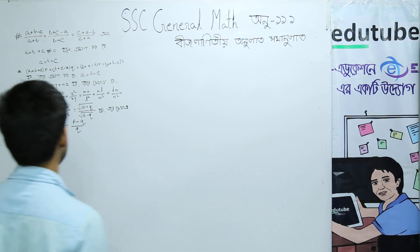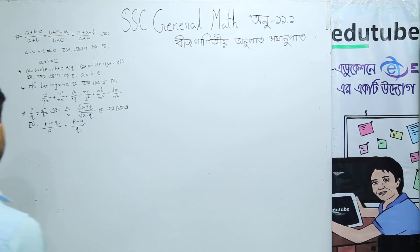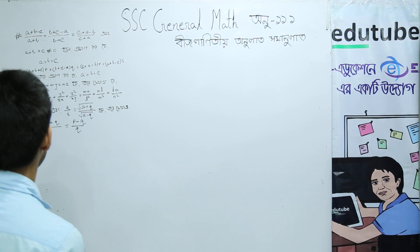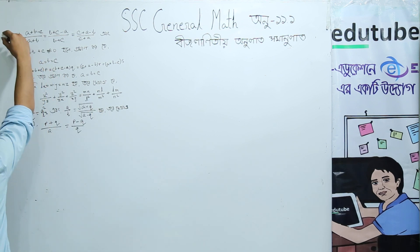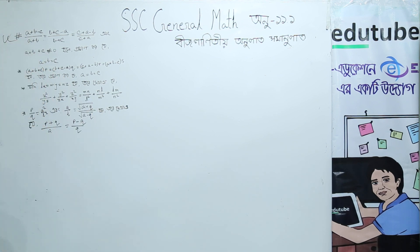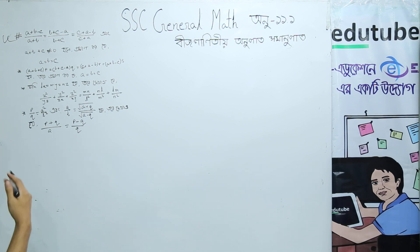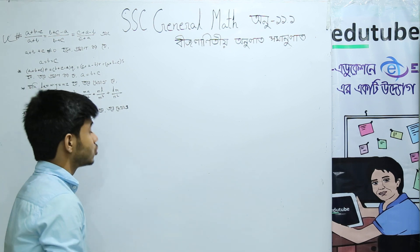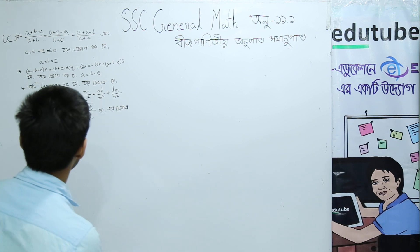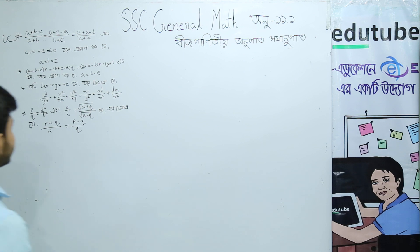We will study the first class. This is: (a plus b minus c) by (a plus b) equals (b plus c minus a) by (b plus c). We will compare this relation to a plus b minus c, and we know that a plus b plus c is not equal to zero.